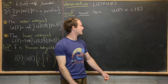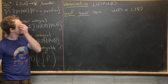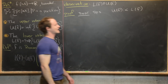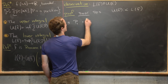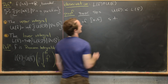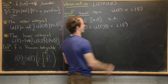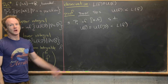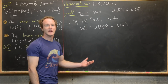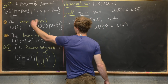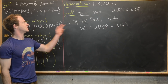Notice that the upper integral of f is the infimum of all upper sums. Since U(f) is strictly less than L(f), there exists a partition P₁ of [a,b] such that U(f) ≤ U(f, P₁) < L(f). In other words, we can find a partition where that upper sum fits in between U(f) and L(f). If this were not possible, it would contradict the definition of the infimum built into the upper integral.